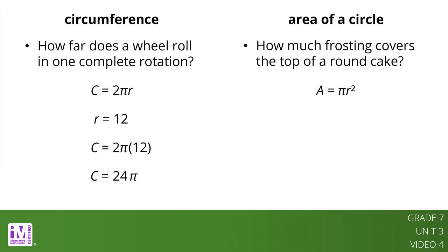Suppose the cake also has a radius of 12 cm. To find its area, we can use the formula A equals pi r squared and substitute 12 in place of r.